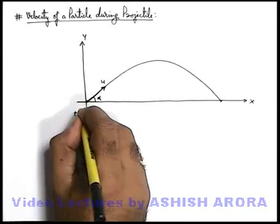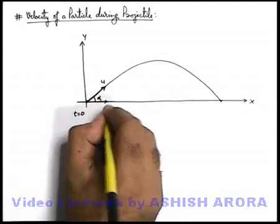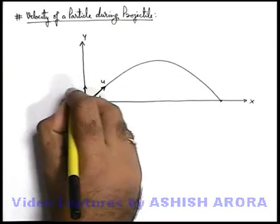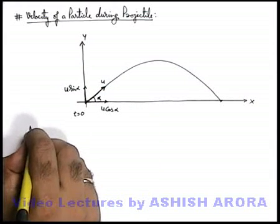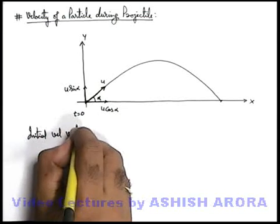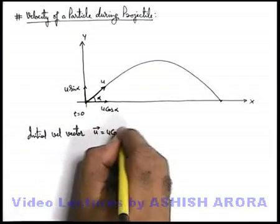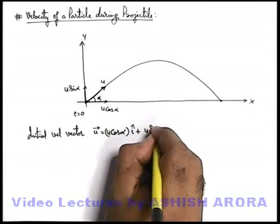If the particle was started at t equal to zero, we can state its x direction component was u cos alpha, and its y direction component was u sin alpha in the beginning. So this velocity vector we can also write - we write initial velocity vector. It can be written as u vector is equal to u cos alpha i cap plus u sin alpha j cap.